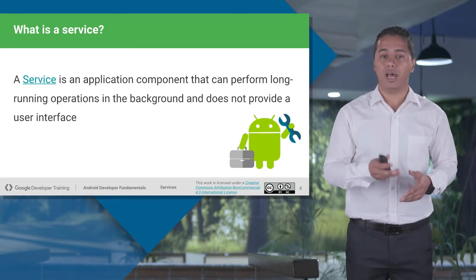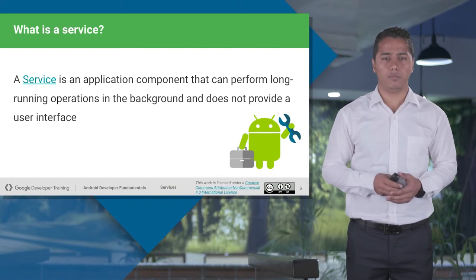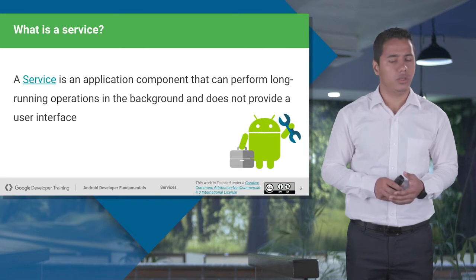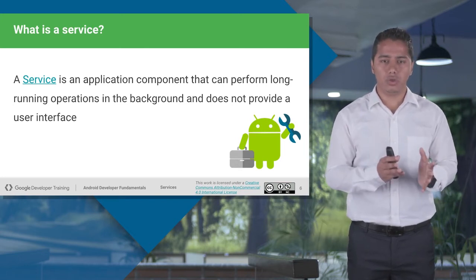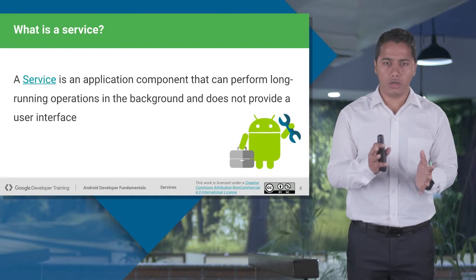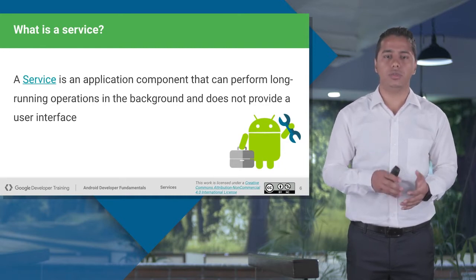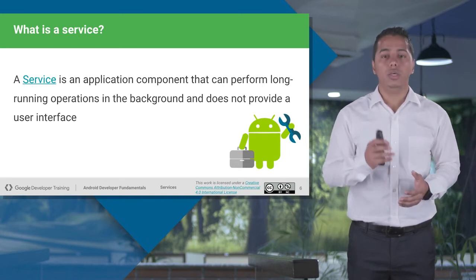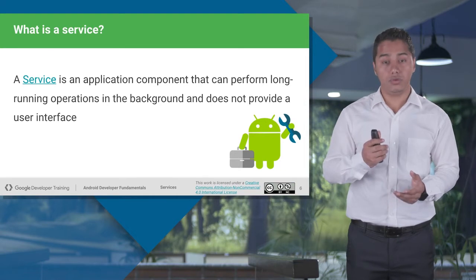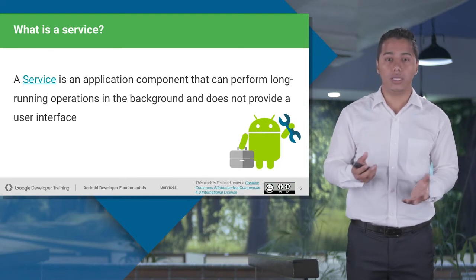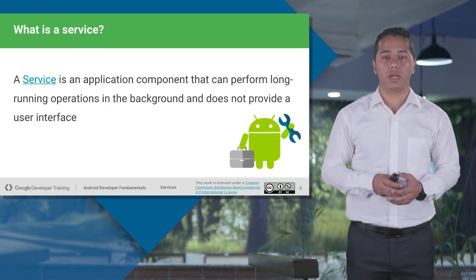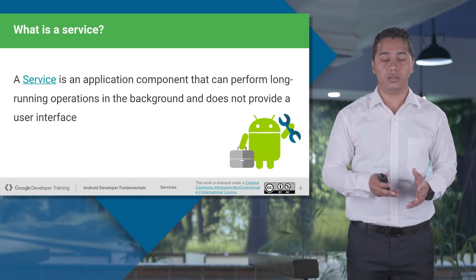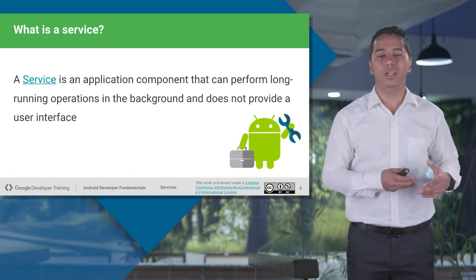For example, whenever you are playing a music player, you go to a music app, you play your music, and even if you close your application or you're no longer interacting with your music player application — say you're browsing or have another application open — your music is still playing in the background. Your music doesn't need a UI to be present all the time. That's what a service is: it doesn't need any UI, it doesn't need user interaction, but it will run in the background.